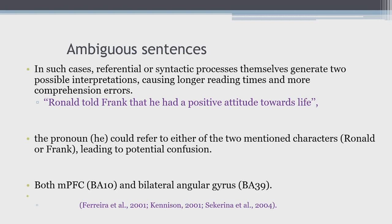Another kind of sentence processing commonly utilized involves ambiguous sentences. Referential or syntactic processes themselves sometimes generate two possible interpretations, causing longer reading time and more comprehension errors. For example, in the sentence 'Ronald told Frank that he had a positive attitude towards life,' the pronoun 'he' could refer to either Frank or Ronald, leading to potential confusion. While reading this kind of sentence, both medial PFC and bilateral angular gyrus are activated because there is a conflict that requires resolution.